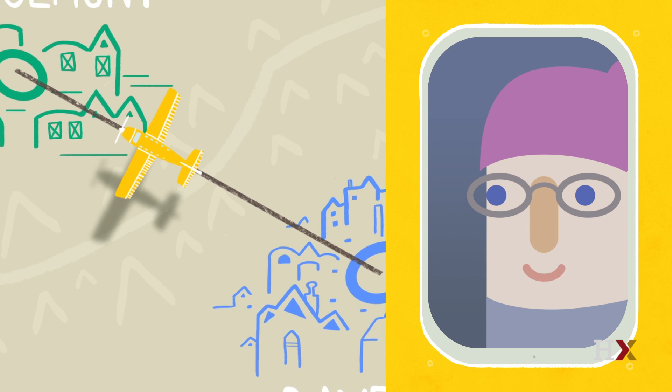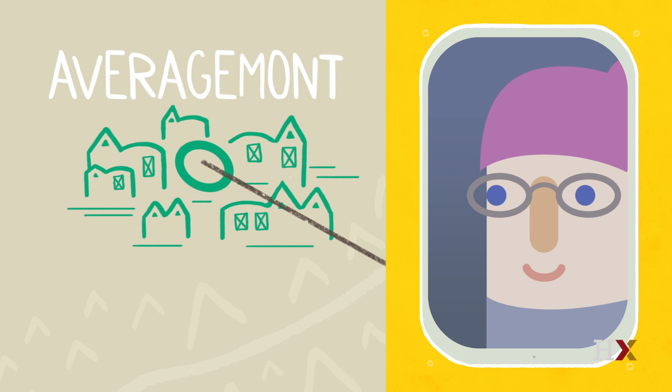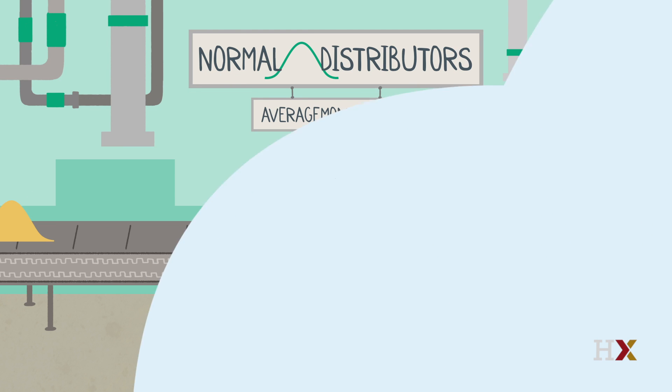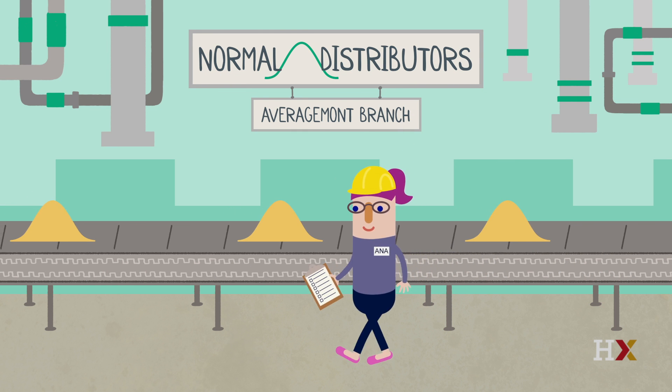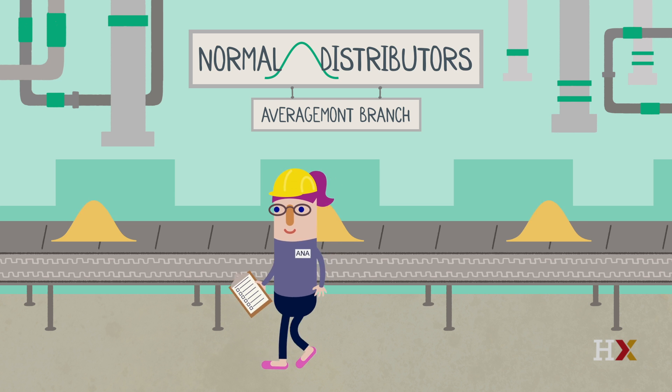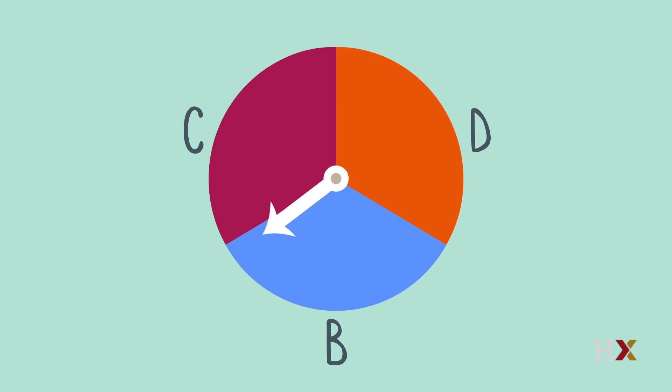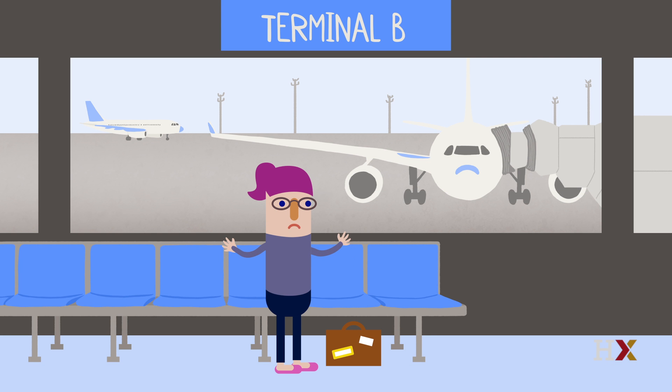Just another average day in Averagemont. After she finishes her inspection, it's time to choose the third stop. Let's see where she lands next. Baysville again? Why do I keep ending up in Baysville?